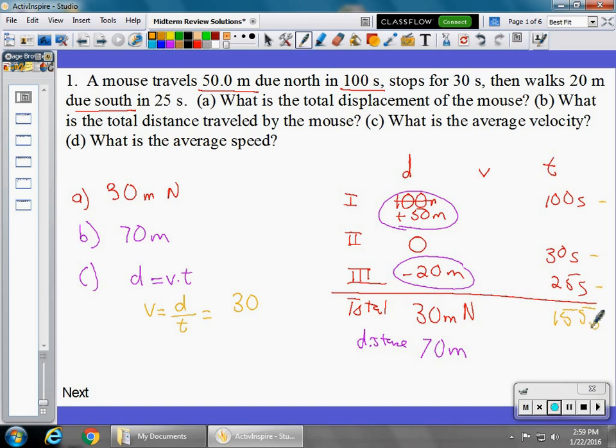It includes the stop, and that's one of the errors people make in time. You have to include the stop, the second leg of the trip. Even though there was no distance, there was a time for that part. So we have 30 meters north in a time of 155 seconds, which is going to give us 0.19 meters per second. And you have to write positive or north. You have to give it a direction. So 0.19 meters per second north.